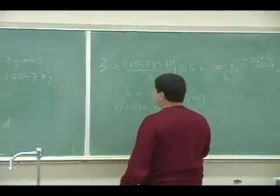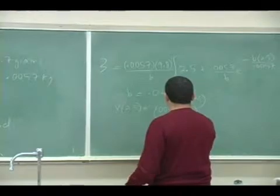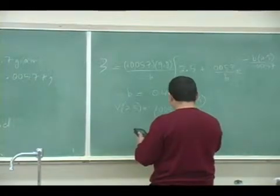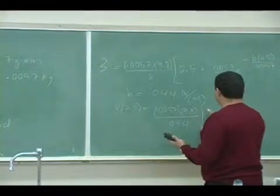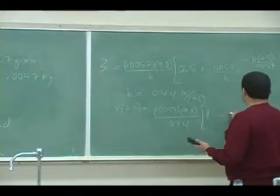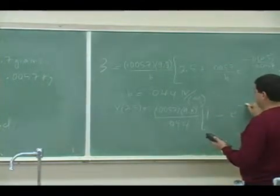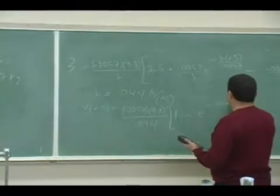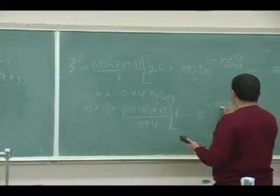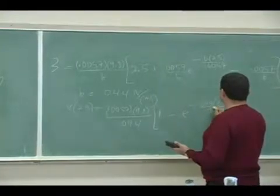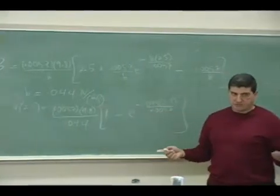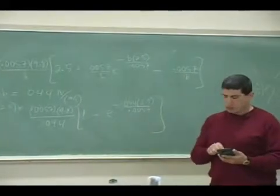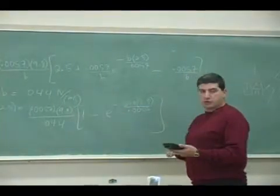...0.0057 times 9.8 divided by b, times 1 minus e to the minus 0.044 times 2.5 seconds divided by 0.0057. This one, you're not using the solver. So you can quit from the solver, and you're simply just putting all this in.